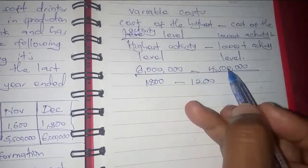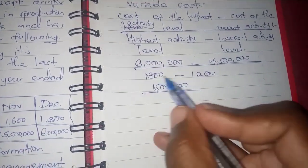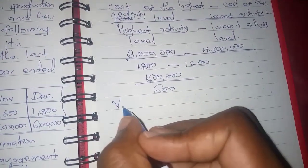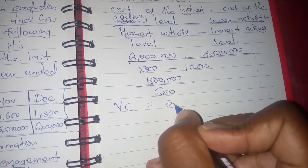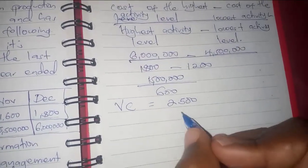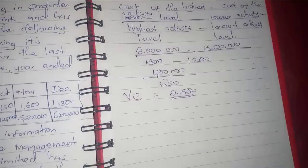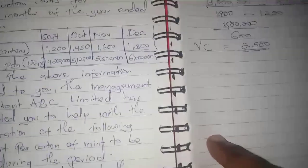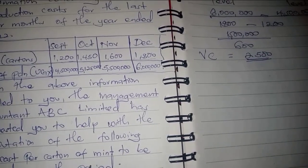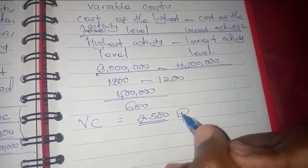When you subtract 4.5 from 6, you remain with 1.5. Dividing by 1,800 minus 1,200, which is 600, the variable cost per carton will be 2,500. That is the variable cost per carton of mint to be incurred — note this is per carton, not the total variable cost.